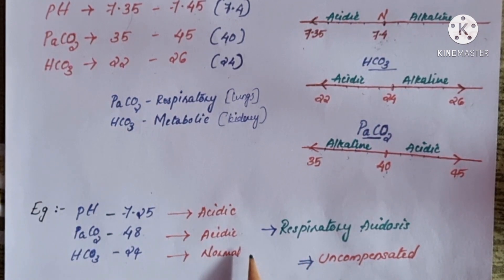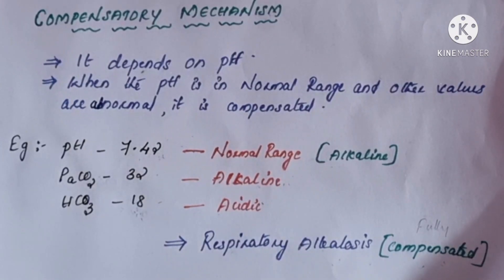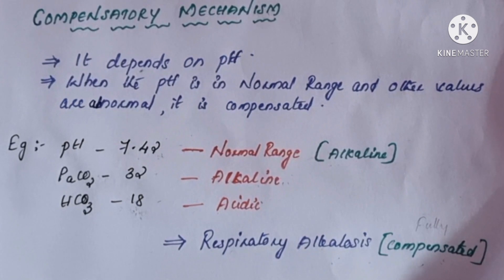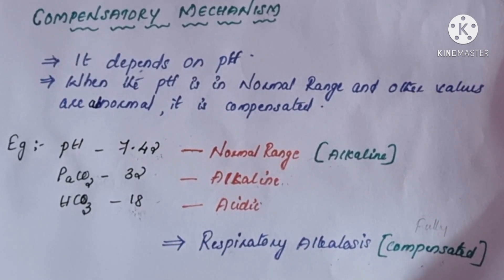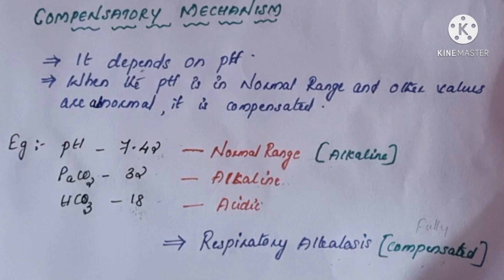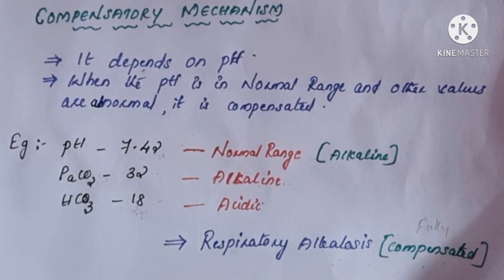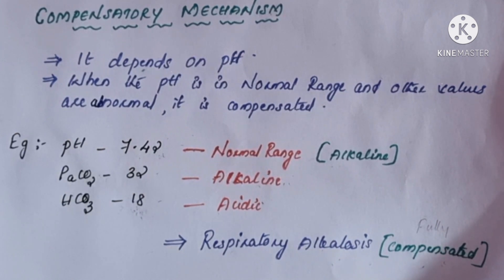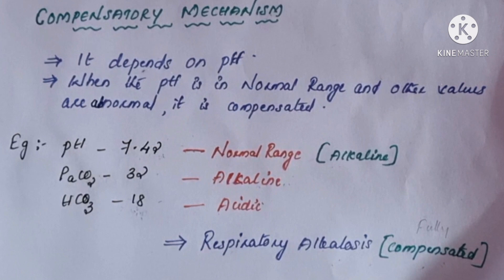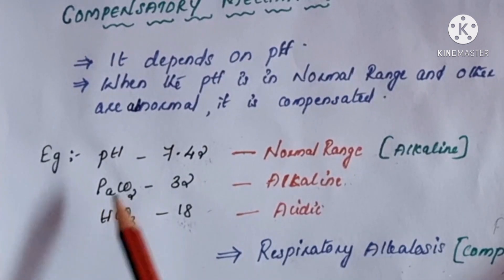Now we need to see whether it is compensated or not. When there is a change in the acid level in the blood, the body will try to balance it — this is called the compensatory mechanism. It depends completely on the pH. When the pH is in the normal range but other values are abnormal, we can say it is compensated.